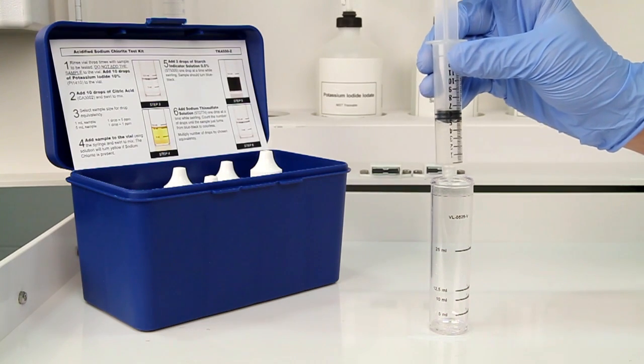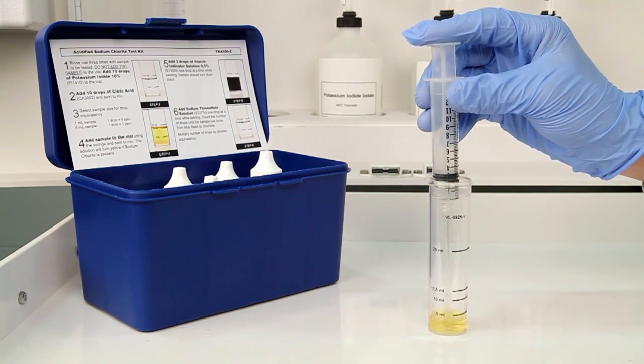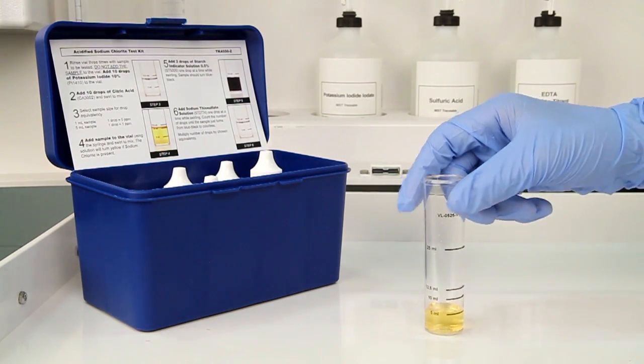Use the syringe to accurately measure your sample and then add the sample to the vial. The sample will turn yellow if sodium chloride is present. Swirl the vial to mix.